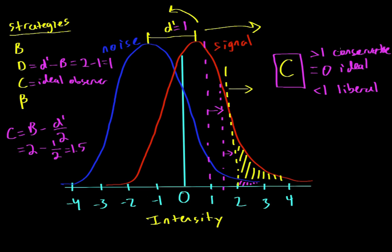So when we say conservative, that means that they respond no more often than an ideal observer. And when we say liberal, then that means that the participant says no less often than the ideal observer.